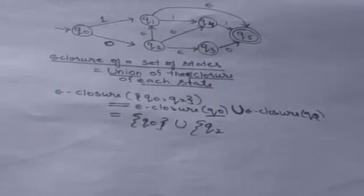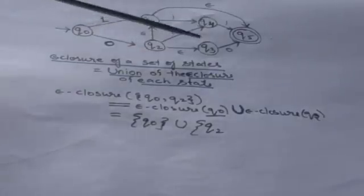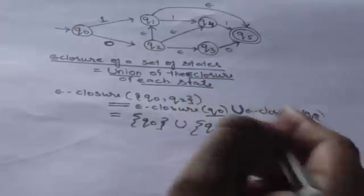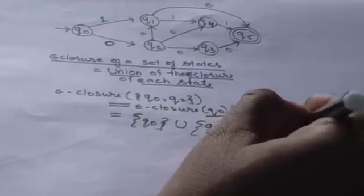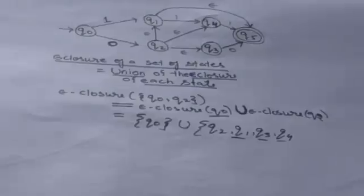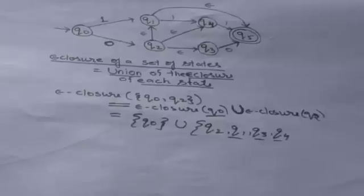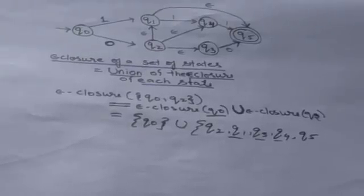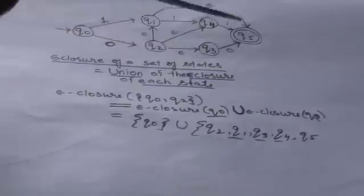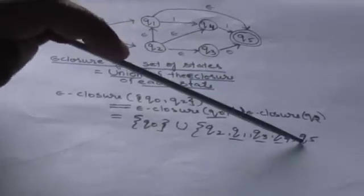Now find the empty closure of Q2. First include Q2 itself, then find its empty transitions. Q2 has three empty transitions: to state Q1, to state Q4, and to state Q3. Include them in the set. Now find their empty transitions. Q1 has an empty transition to state Q5, so add Q5. There are no empty transitions for Q3 or Q4.